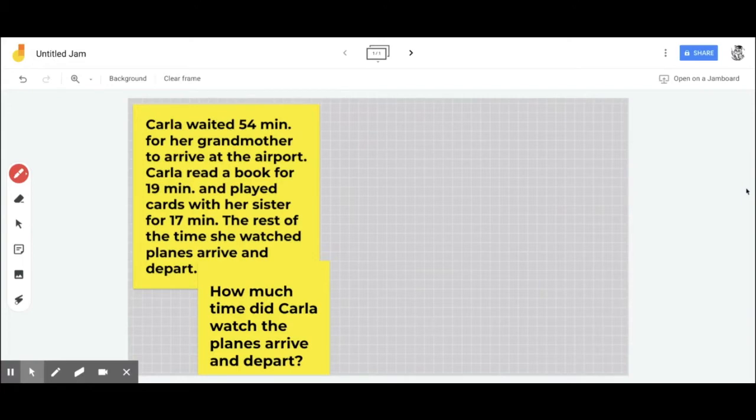Carla waited 54 minutes for her grandmother to arrive at the airport. Carla read a book for 19 minutes and played cards with her sister for 17 minutes. The rest of the time, she watched planes arrive and depart. How much time did Carla watch the planes arrive and depart?